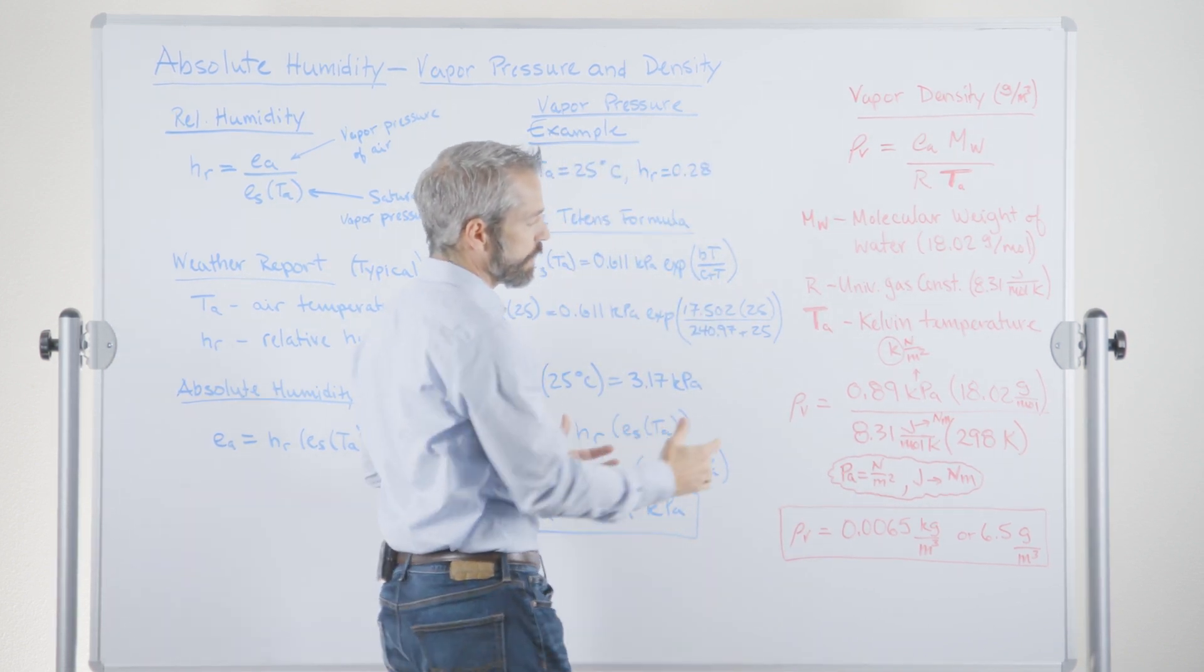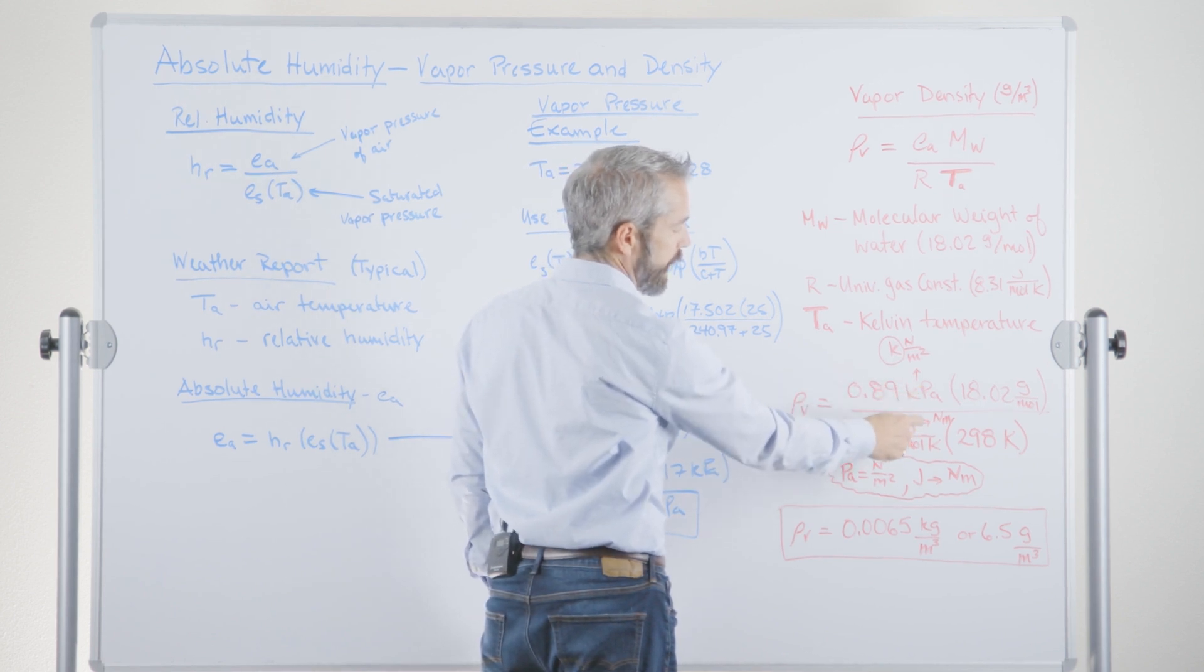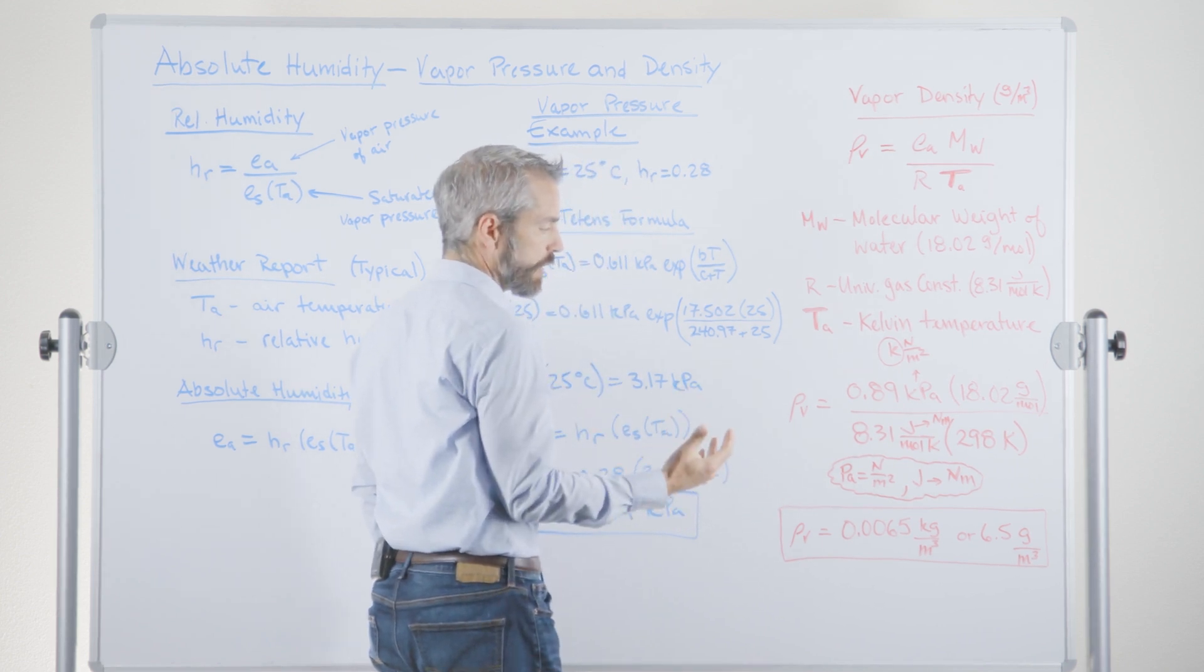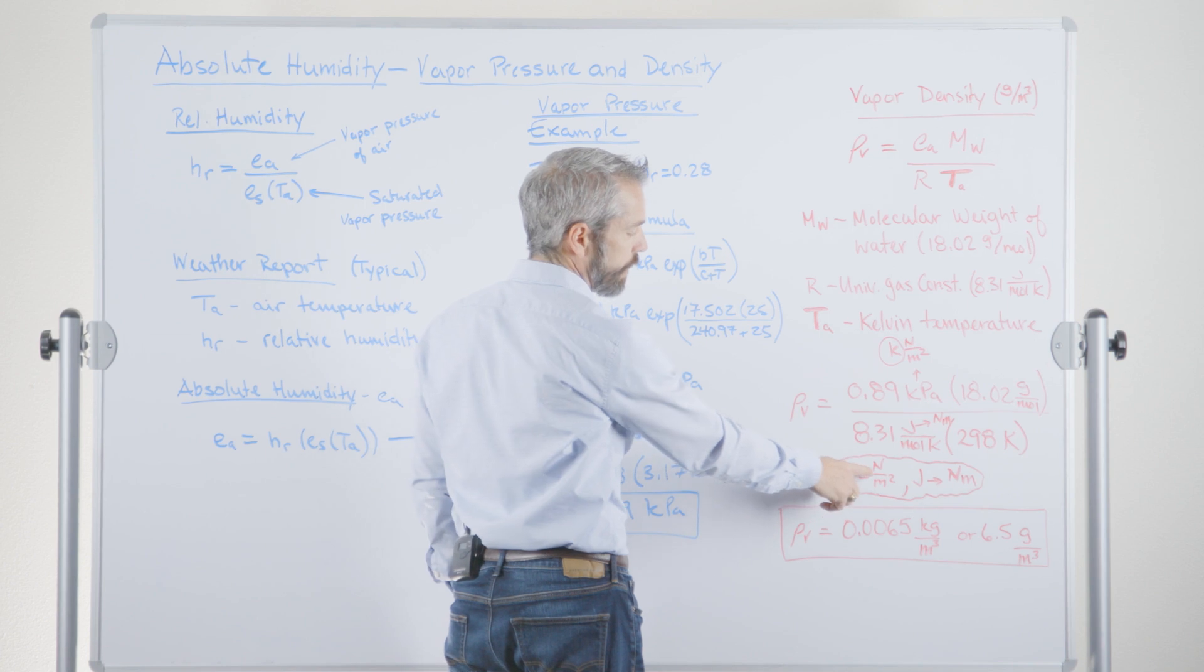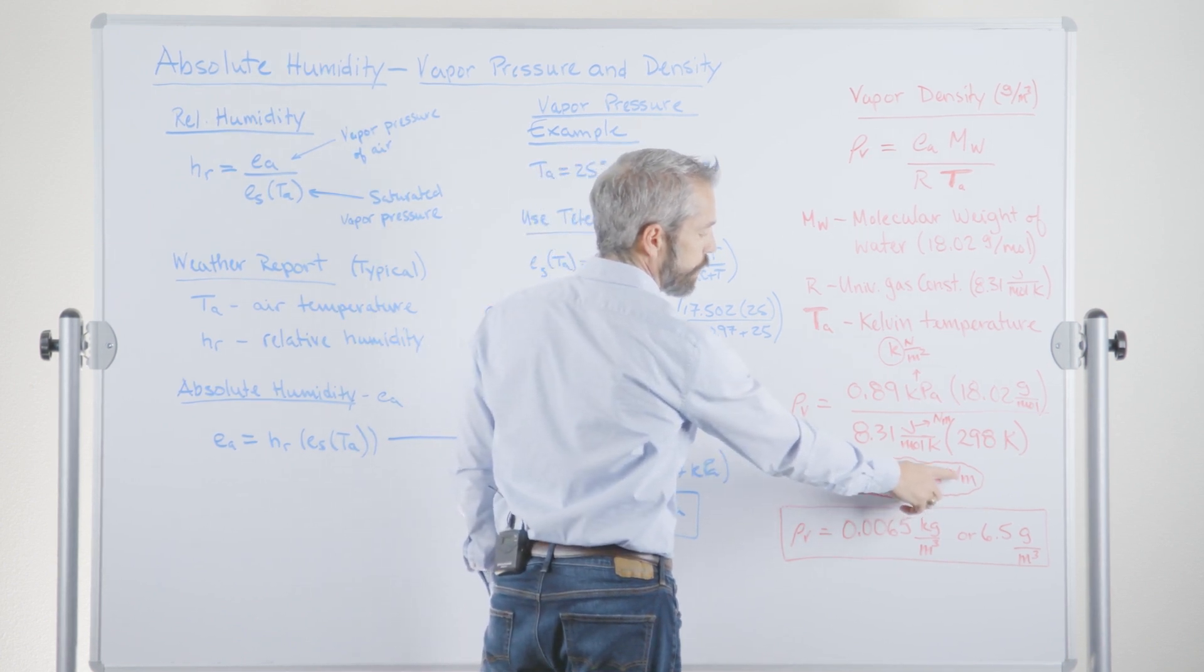So as we look at this, you immediately see, oh, how do I cancel these units? The kilopascals and the joules are certainly not going to work out of that as they are. But luckily, there are some conversions we can use. A Pascal is equal to a Newton per meter squared. And a joule is equal to a Newton meter.